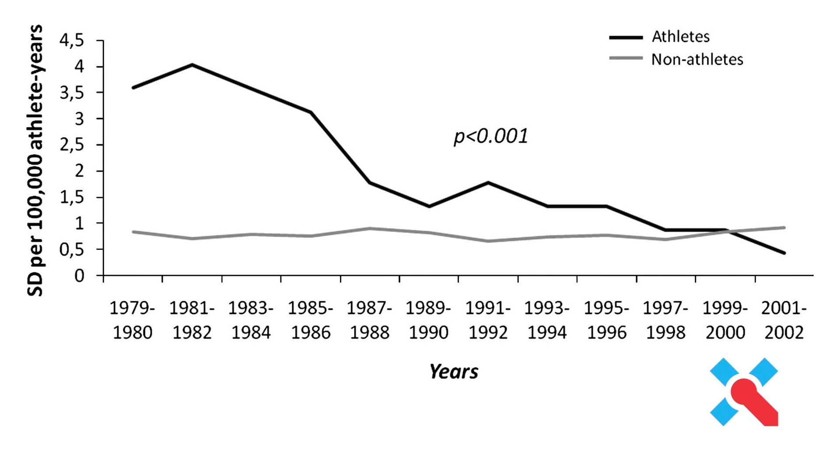Based on this, we have data coming from Corrado et al., where screening in Italy — particularly in the Veneto region — was one of the first in the world to be instituted on a wide-scale basis, starting in the late 1970s. We have data spanning over 20 years looking at death rates in athletes versus non-athletes. The death rate in athletes was slowly going down, and by around 2004–2005, non-athletes were at a marginally higher risk compared to their athletic counterparts — not because the disease decreased, but purely because athletes were being screened and non-athletes were not.